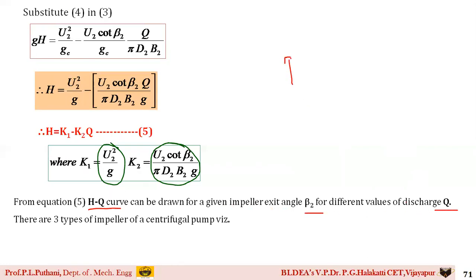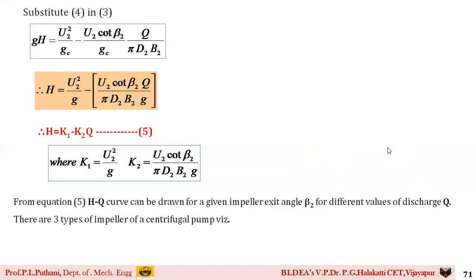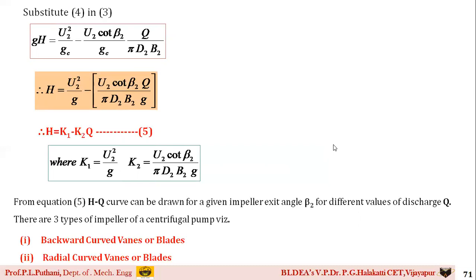The three cases considered are: β₂ less than 90°, β₂ equal to 90°, and β₂ greater than 90°. For all these cases we draw the velocity triangles. Correspondingly, there are three types of impeller blades for a centrifugal pump: backward curved vanes or blades, radial curved vanes or blades, and forward curved vanes or blades. We will discuss each of these one by one.